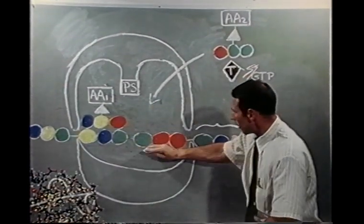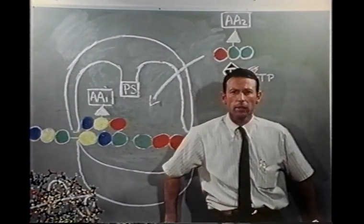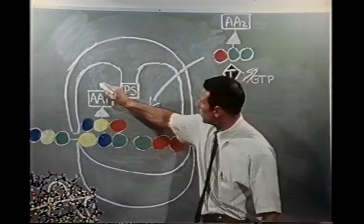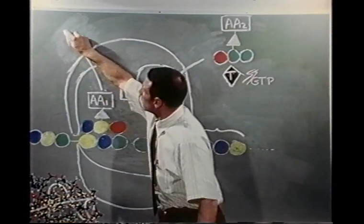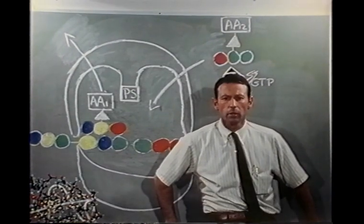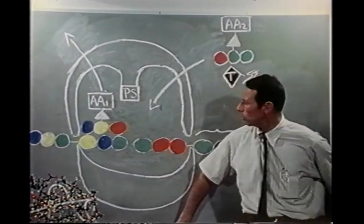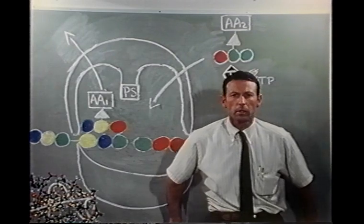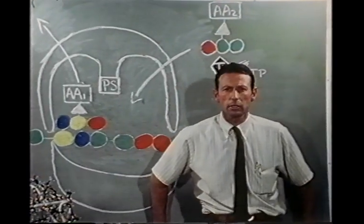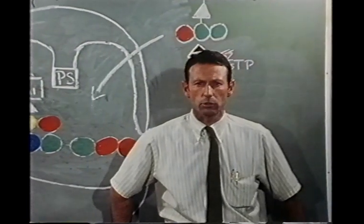Next, in an energy-requiring step, the mRNA-tRNA complex is shifted to bring the next message unit into the ribosome, allowing the process to repeat. At the end, the terminator factor, seeing the termination signal, cleaves the completed protein from the last tRNA, releasing it from the ribosome. The two subunits are split apart and separated from the messenger by the ribosome releasing factor. My diagram is of necessity static, but protein synthesis is a dynamic process — this movie tries to bring those dynamic interactions to life.